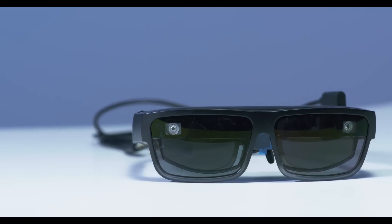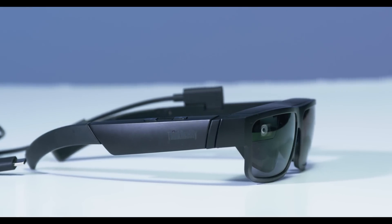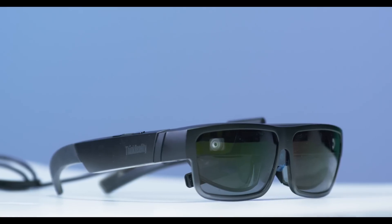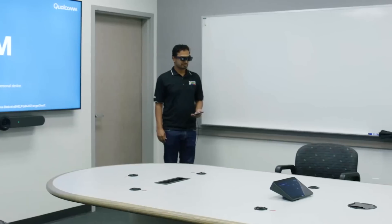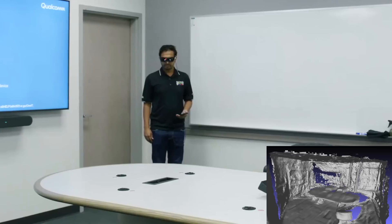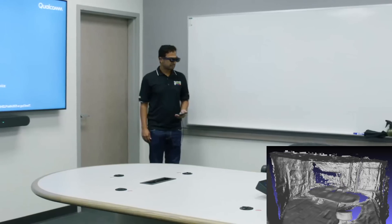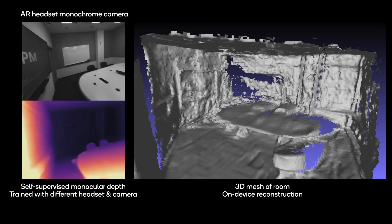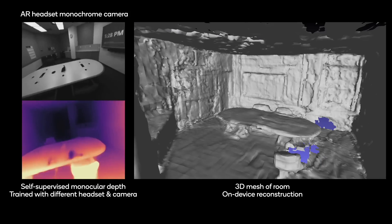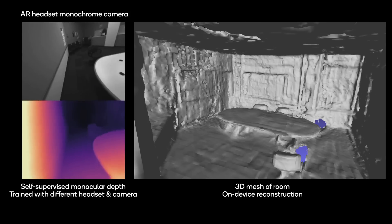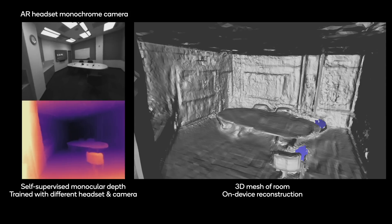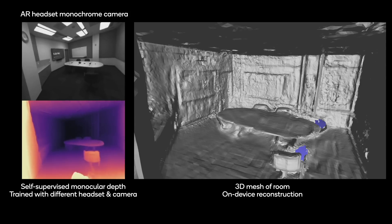Now let's jump to the on-device 3D reconstruction demo running in real-time. The processing is split between the AR glasses and tethered phone. Here you can see the AR user looking around the room as the 3D scene is constructed. The monochrome camera on the AR device sees the user's perspective. These images are fed to our low-latency depth estimation model, and the predicted depths and the 6 degrees of freedom camera poses are provided to the on-device reconstruction module.